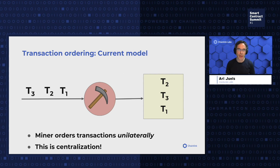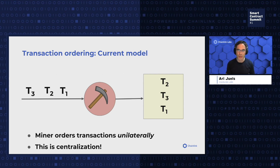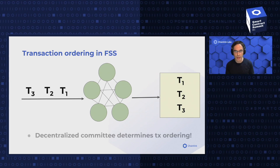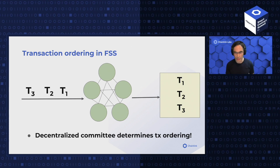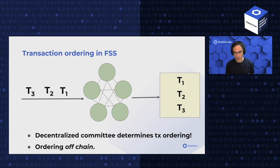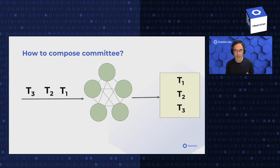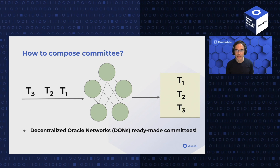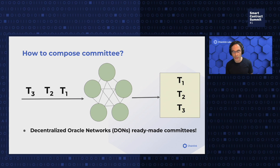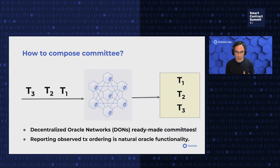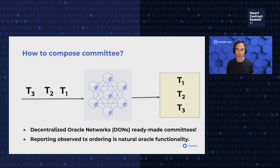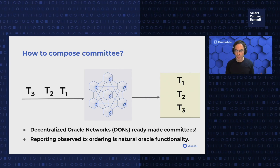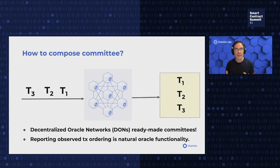Just a reminder: in the current model of transaction ordering, it's the miner that decides unilaterally how transactions get ordered. In FSS, the goal is to replace this miner with a collection of nodes — a decentralized committee — to determine how transactions get ordered, and this ordering happens off-chain. The natural question is where we're going to get this committee. It turns out that decentralized oracle networks are actually great ready-made committees. They provide the trustworthiness required for this operation. Ordering transactions is a very natural oracle functionality — oracles observe off-chain behavior, reach consensus on their observation, and report it on-chain. And that's exactly what FSS is doing.